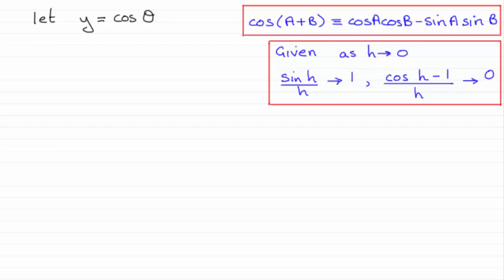Hi there. Now in this video what I want to do is show you how you can differentiate from first principles y equals cosine theta and get the result that dy by d theta is equal to minus sine theta. And what I'm going to be using are these two results that you see here that I'm taking as assumed knowledge.